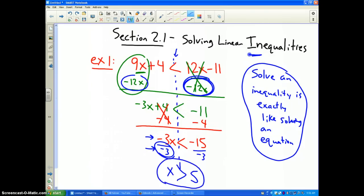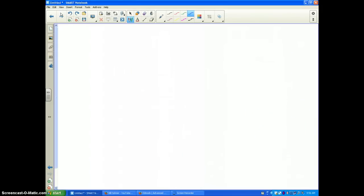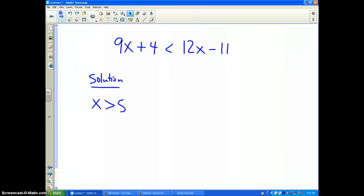Therefore, my final answer is x is greater than 5. Now I'm going to rewrite the inequality, which was 9x plus 4 less than 12x minus 11, and we got a solution: x is greater than 5 after we flipped the inequality sign around.